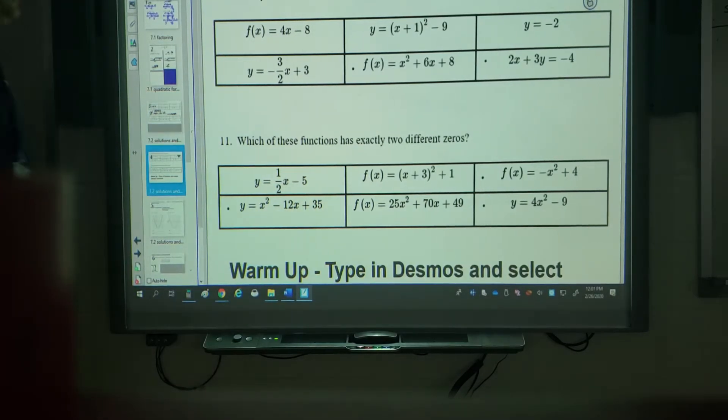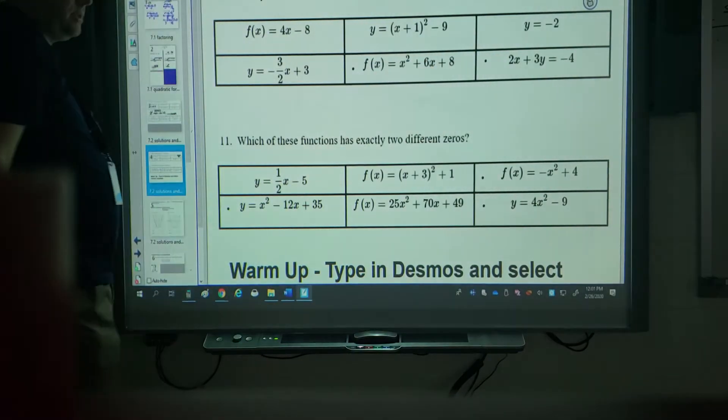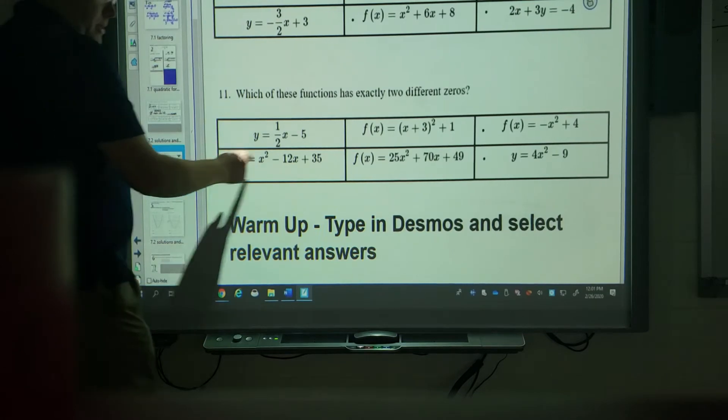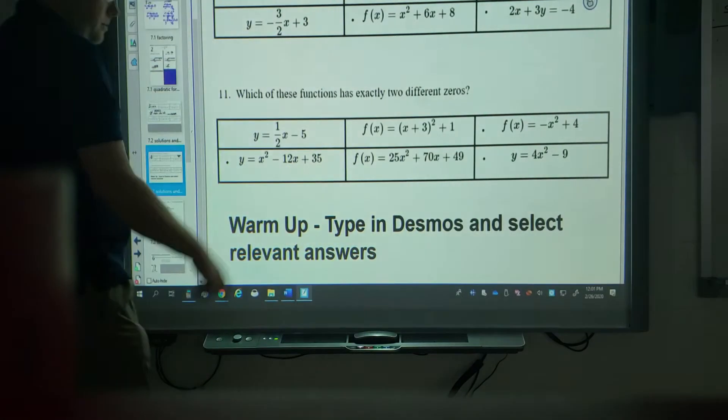And if you checked question 10 you should have found these last two here. And the x-intercept is negative two. And one that had two different zeros should have been this one, this one and this one.